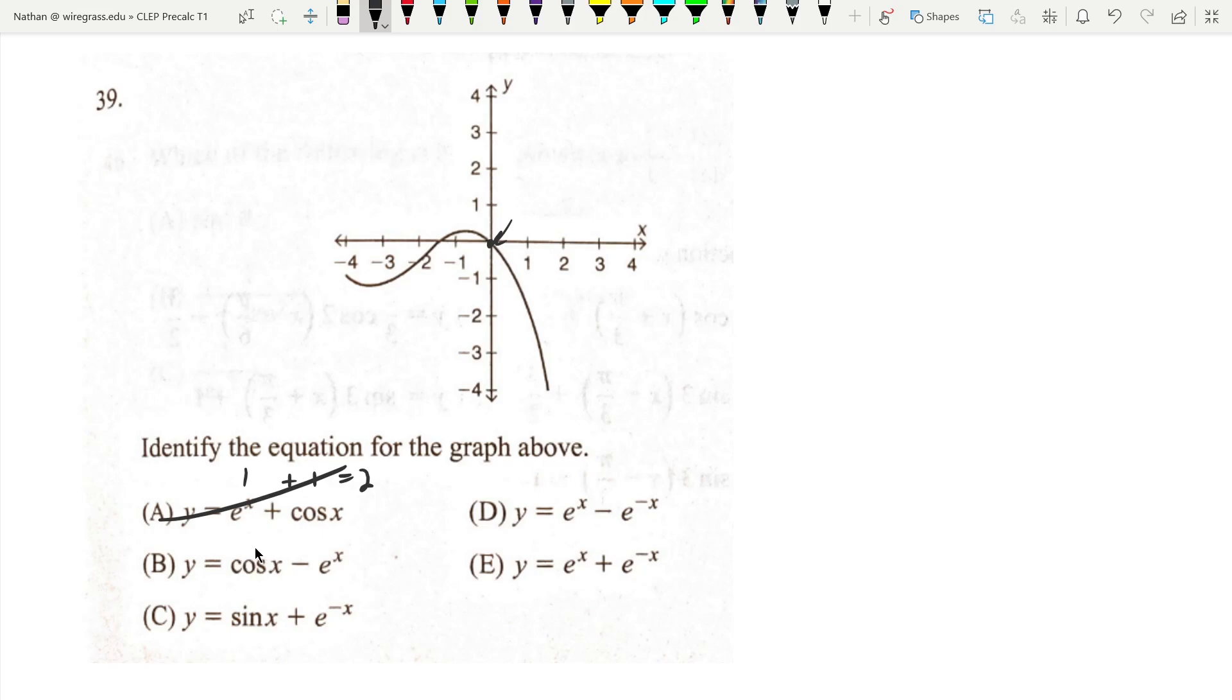This one has cos(0) is 1, e^0 is 1, 1 minus 1 is 0. That one looks to be correct.